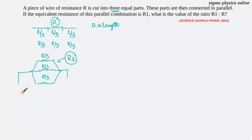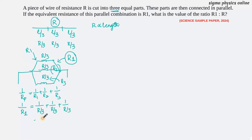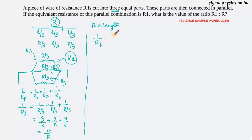We know the formula for resistance in parallel: 1/Rp = 1/R1 + 1/R2 + 1/R3, and so on. Here the equivalent resistance is R1. Each of the three resistors R1, R2, and R3 has a value of R/3 ohm. So 1/R1 = 3/R + 3/R + 3/R = 9/R. Therefore R1 = R/9.